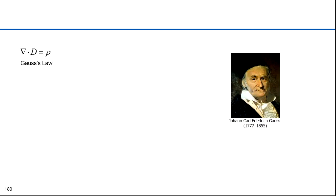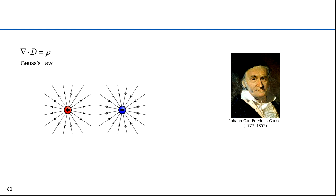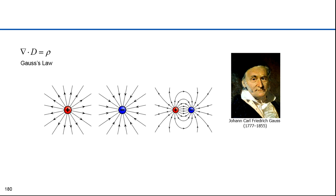The third equation is Gauss's law, which expresses that an electric charge creates an electric field. Positively charged particles attract negatively charged particles; like charges repel each other. Here's a positive charge — you can see field lines emanating outward. Here's a negative field — field lines emanate inward. Here's a positive and a negative: a dipole.